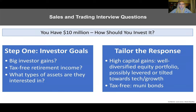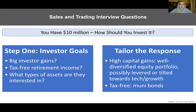Outstanding sales and trading interview questions. Number one: you have $10 million — how should you invest it? When you get this question, the first move is to ask the investor what their goals are. Does the investor want big capital gains? Do they want tax-free retirement income? What types of assets are they predisposed to? When asked this in an interview, ask the interviewer a clarifying question back: are they old or young? What products do they want? How much do they need this money? Then tailor your response accordingly — if they want high capital gains, maybe a well-diversified equity portfolio possibly levered toward tech or growth; if they want tax-free income, maybe municipal bonds.